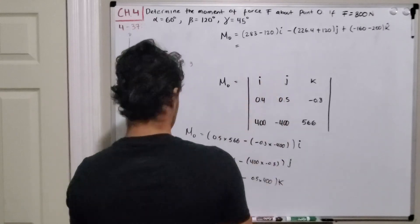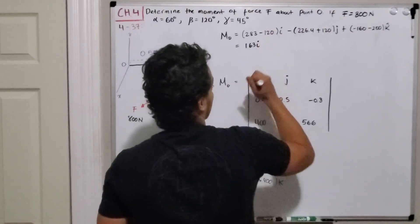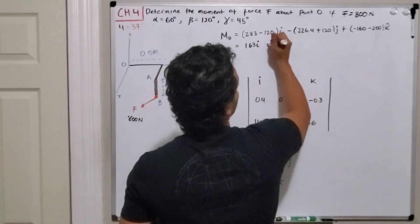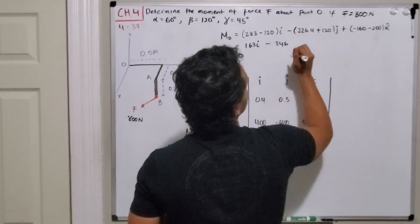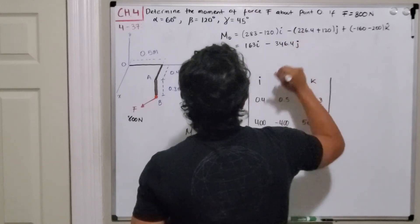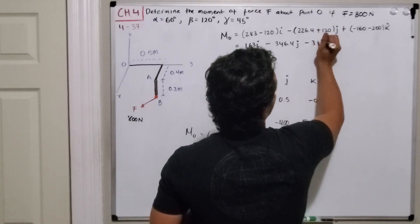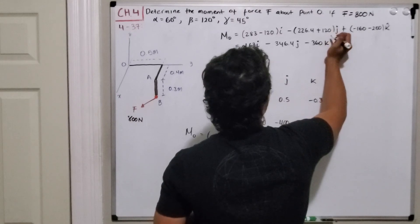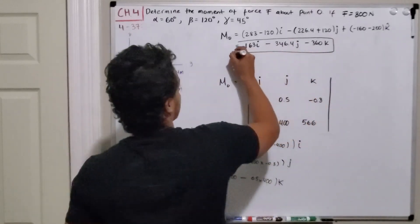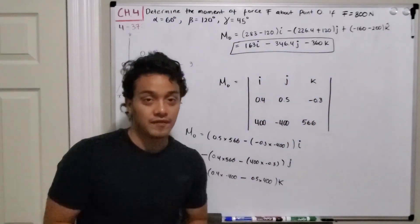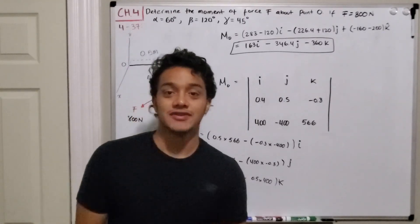Simplifying: 283 minus 120 gives positive 163 in the i direction. For j we get negative 346.4 in the j direction. And for k we get negative 360 in the k direction. So the moment that force F creates about point O is 163i minus 346.4j minus 360k Newton-meters. Thank you for watching — if you have any questions or comments, please comment below and I'll see you in the next video.